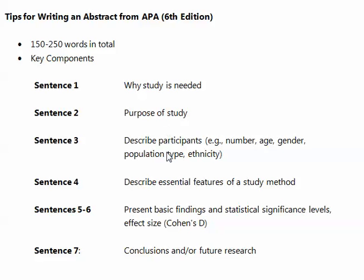The third sentence describes participants. You would almost always include the number of participants, age, and perhaps gender, population type — like whether they're elementary or secondary school students — and perhaps ethnicity.